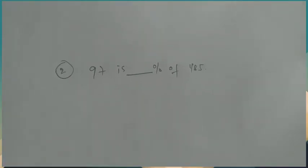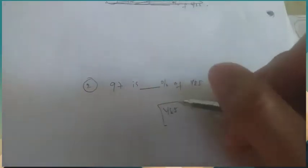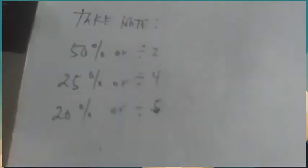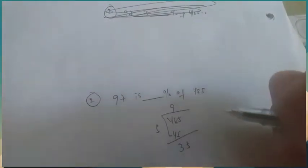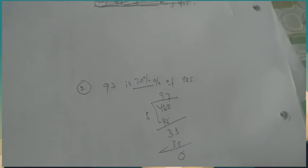Let's proceed to number 2: 97 is blank percent of 485. Let's try 20%. For 20%, we divide by 5. So 485 divided by 5: 9 times 5 equals 45, bring down the 3, then 5, and 7 times 5 equals 35. That gives us 97. So 97 is 20% of 485.